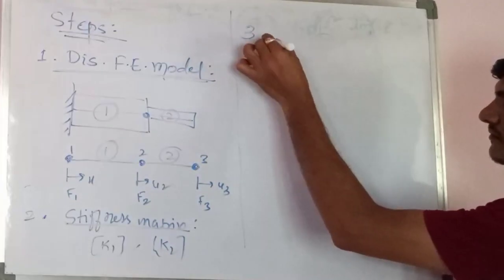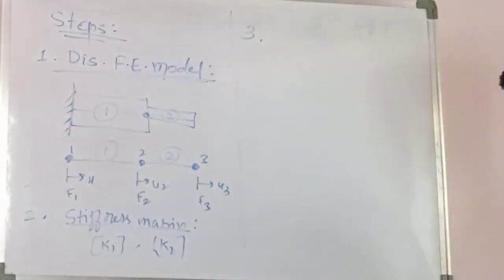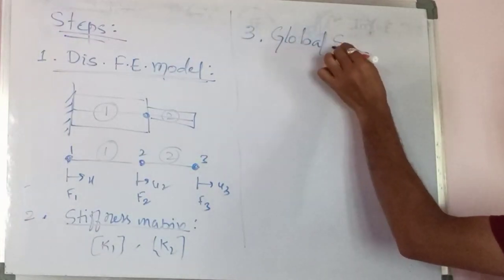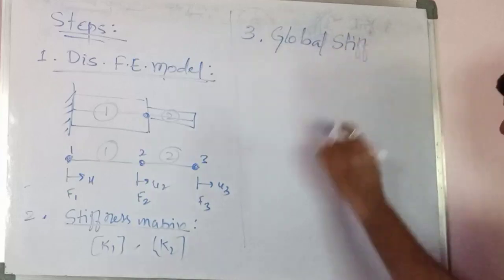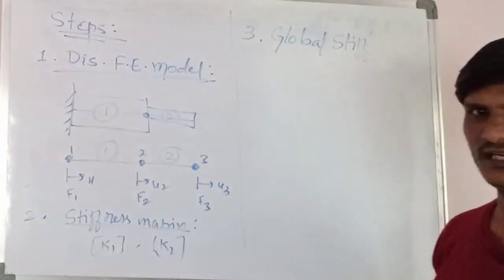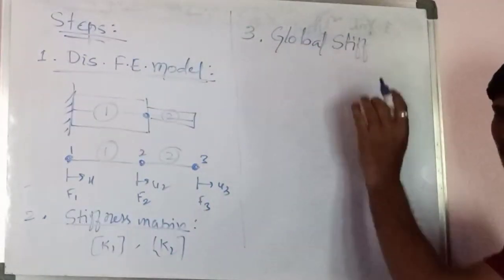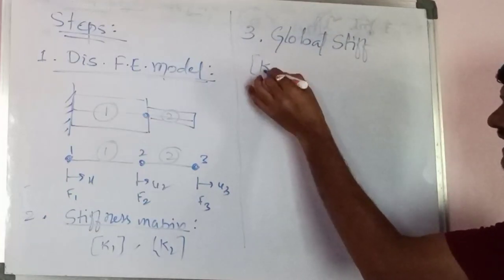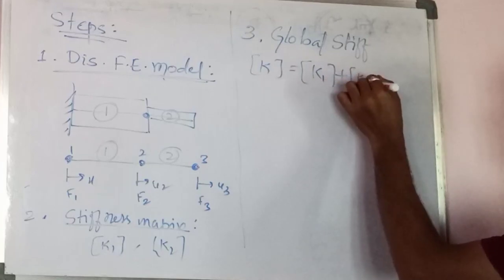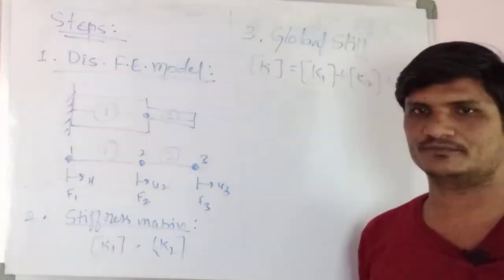The third step, after calculating the stiffness matrix for individual elements, is to calculate the global stiffness matrix. The global stiffness matrix is the assembling, or addition, of all the stiffness matrices. Using the global stiffness matrix method: K = K1 + K2 + K3, and so on if there are more elements.